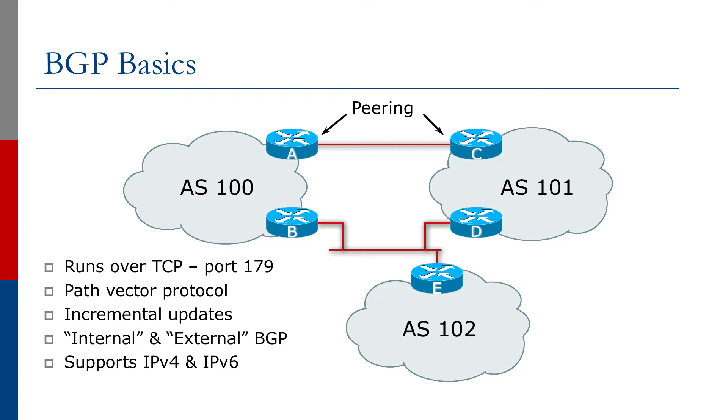BGP can carry both IPv4 and IPv6 routing information. It's best practice to have two separate BGP sessions between peers — one between IPv4 addresses which carries the IPv4 prefixes, and a separate one between IPv6 addresses to carry IPv6 prefixes.